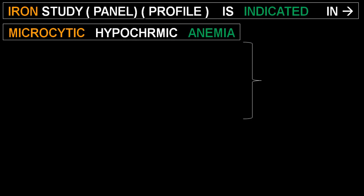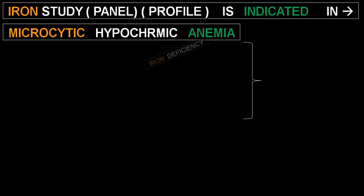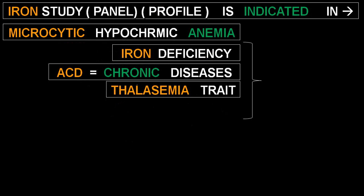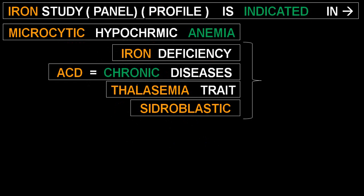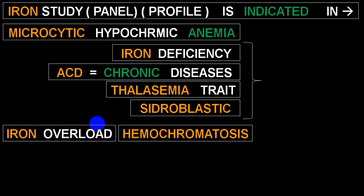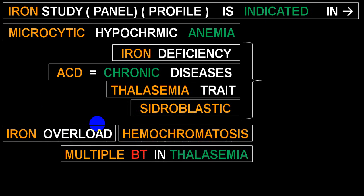By and large, if we clinically diagnose iron deficiency anemia, we often don't order an iron panel because it is costly — but it gives a lot of information. It can differentiate iron deficiency from anemia of chronic disease, thalassemia trait, sideroblastic anemia, and even lead toxicity, all of which can give rise to microcytic hypochromic anemia. It is also beneficial for identifying iron overload — excessive iron storage seen in hemochromatosis — and in thalassemia major patients requiring multiple blood transfusions, where iron overload can occur.